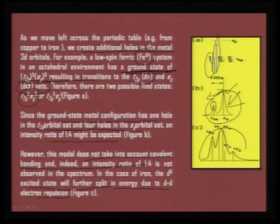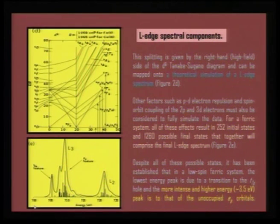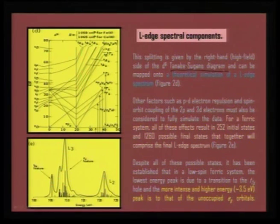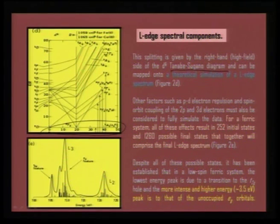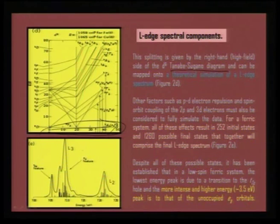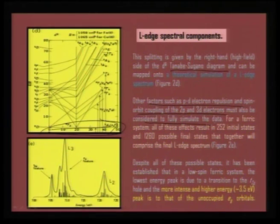These two peaks need to be analyzed more carefully because there are other things that compound with these structures. If you single out just the L-edge spectral component and try to look at it specially for complexes with the metal center, then your Tanabe-Sugano diagram will help you theoretically simulate how many L-edge spectrum features can originate. As you would see, going from lower to higher energy regions the spectral features actually become more complicated, so more and more transitions are expected at higher energies. Other factors like p-d electron repulsion and spin-orbit coupling all have to be considered when you try to simulate all possible L-edge spectral components.